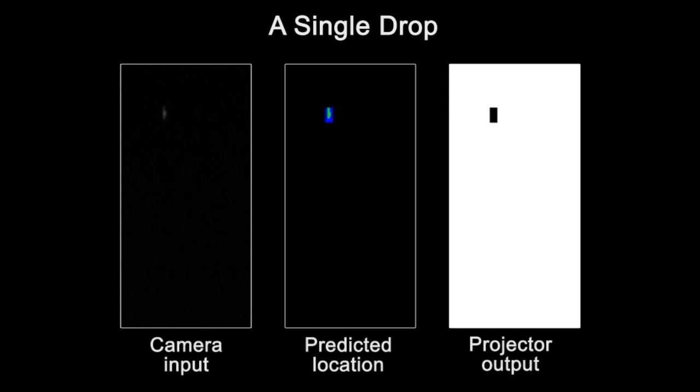For the predicted location video, the color red indicates the parts of the drop that are incorrectly illuminated. Green indicates the parts of the drop that are correctly not illuminated. And blue indicates pixels that were incorrectly turned off.